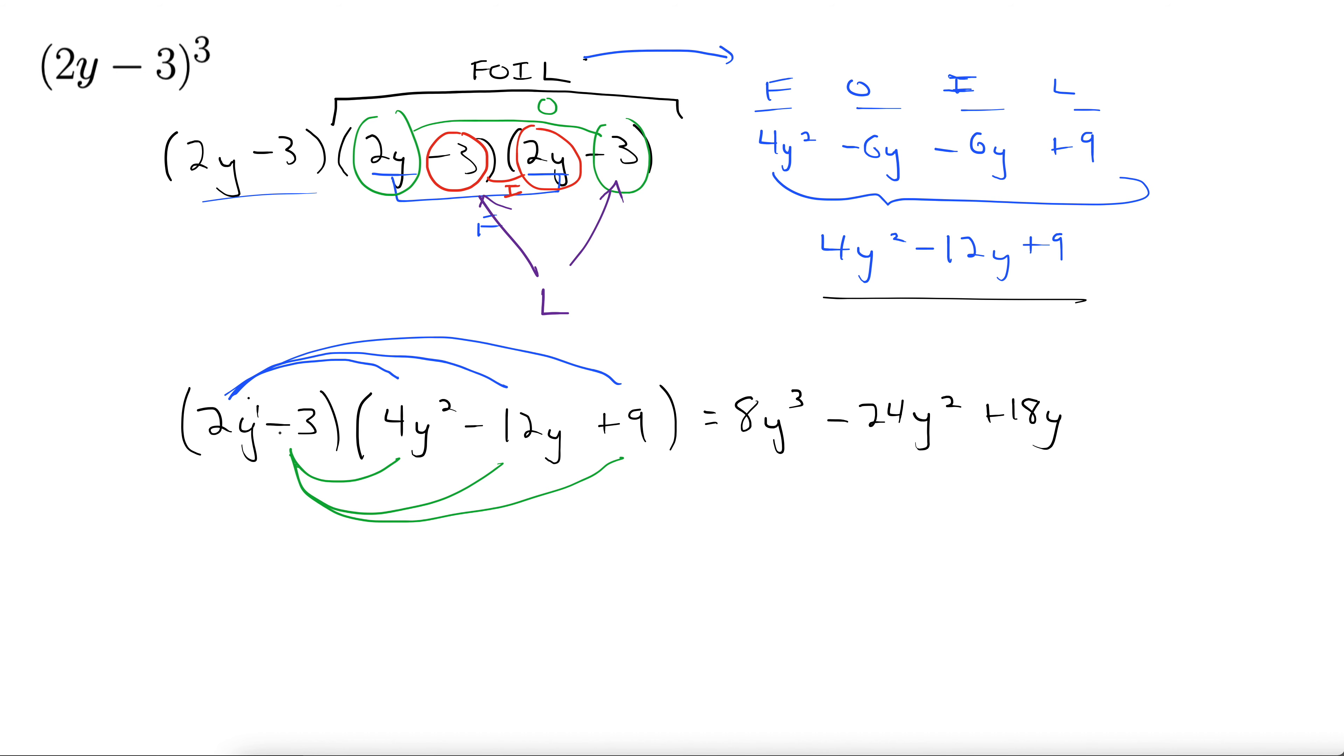Coming back over to take care of this negative 3. Negative 3 times 4y squared, negative 12y squared. Negative 3 times 12y, negative 12y comes back around to positive, so this is plus 36y. And finally, negative 3 times 9, negative 27.